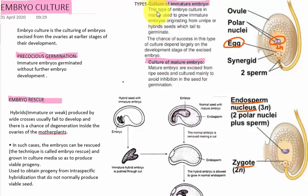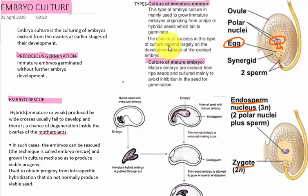In the case of immature embryo culture, this type of embryo culture is mainly used to grow the immature embryos which are originating from unripe or hybrid seeds which fail to germinate. The chance of success in this type of culture depends largely on the developmental stage of the excised embryo. So the purpose of the culture is to grow those immature embryos and produce viable plants.